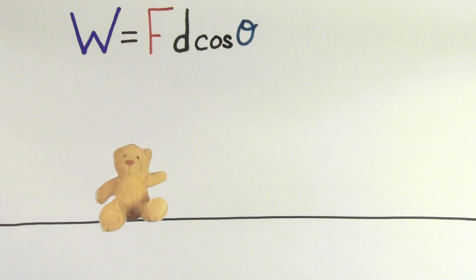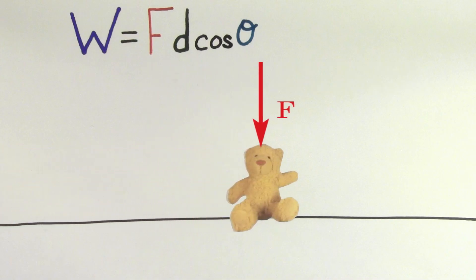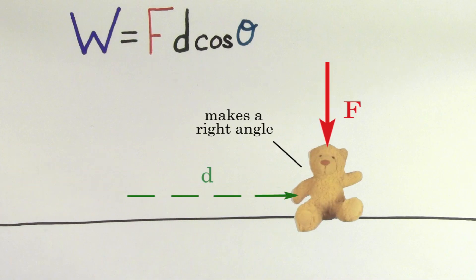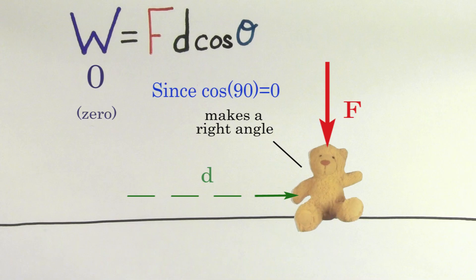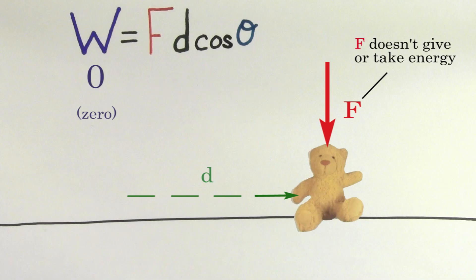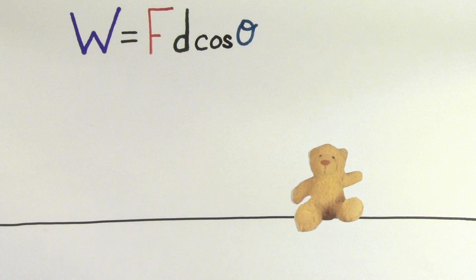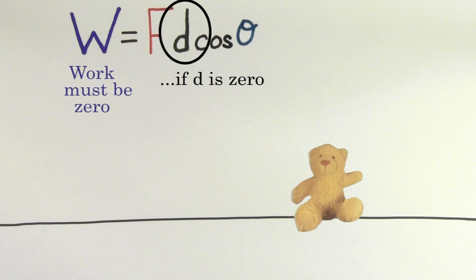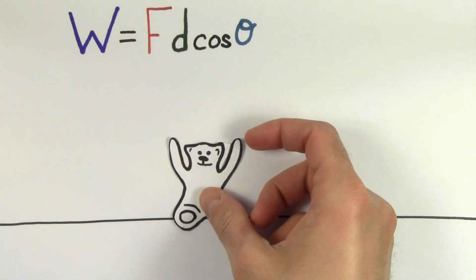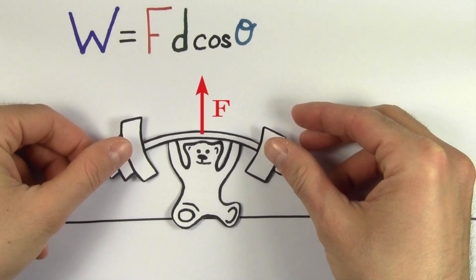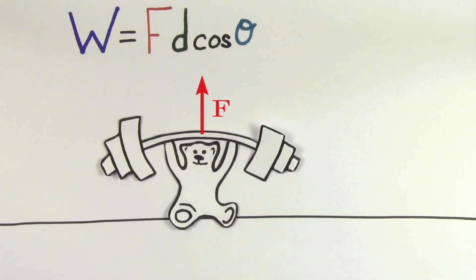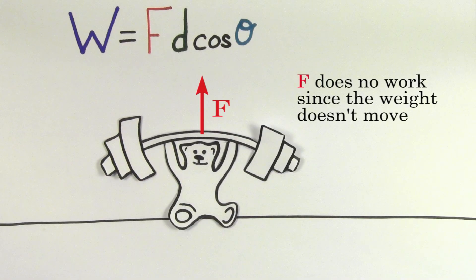If a force points in a direction that's perpendicular to the displacement, the work done by that force is zero, which means it's neither giving nor taking away energy from that object. Another way that the work done by a force could be zero is if the object doesn't move, since the displacement would be zero. So the force you exert by holding a very heavy weight above your head does not do any work on the weight since the weight is not moving.